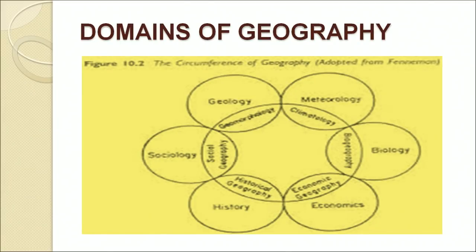If we consider geography as a social science subject, it is also closely related to the natural sciences like meteorology, botany, zoology and chemistry, as well as other social science subjects like economics, political science, anthropology, philosophy and sociology. In this way, we can say that geography is a multidisciplinary and interdisciplinary subject of study.